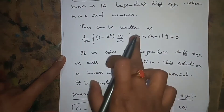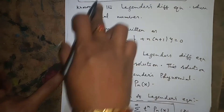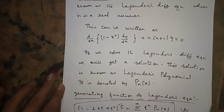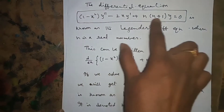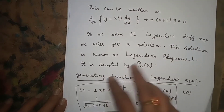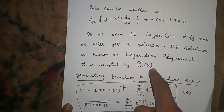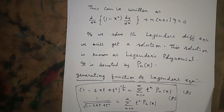Just remember this Legendre's Differential Equation. If you solve the Legendre's Differential Equation, you will get one solution. That solution is known as Legendre's Polynomial, and it is denoted by Pn of x.